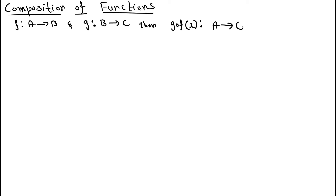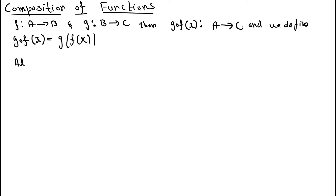One function f from A to B and g from B to C, then g composition f is defined from A to C, and g composition f of x is equal to g of f of x. Also, we can define f composition g of x is equal to f of g of x.